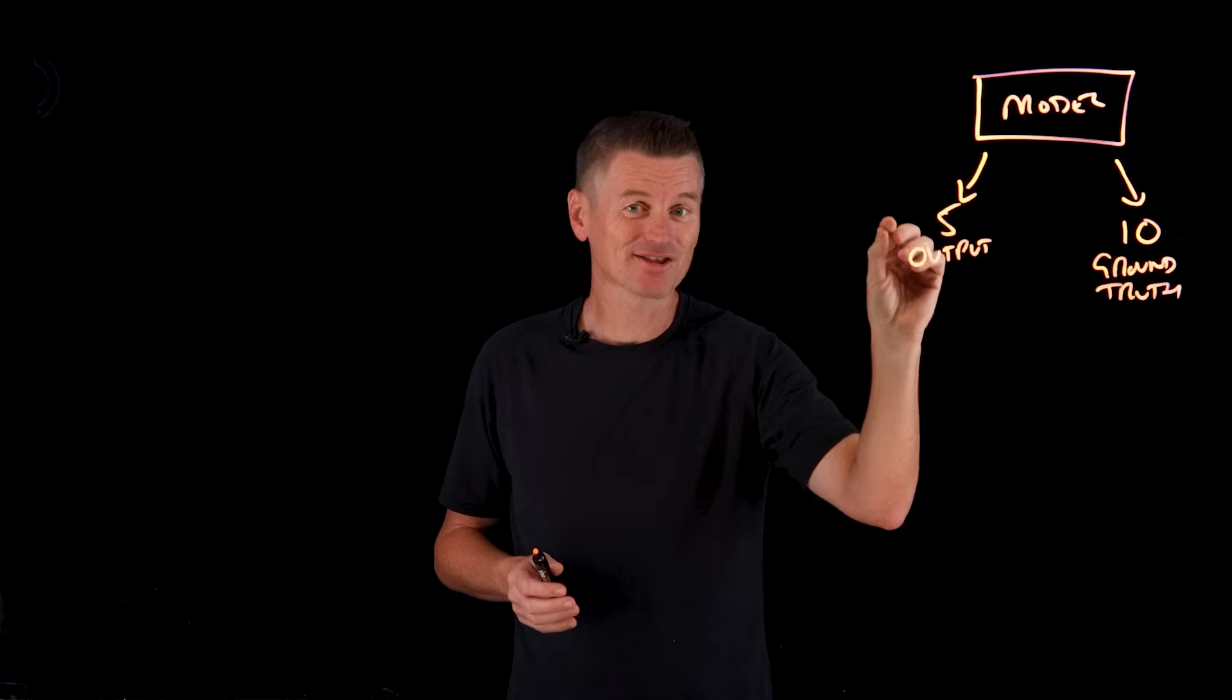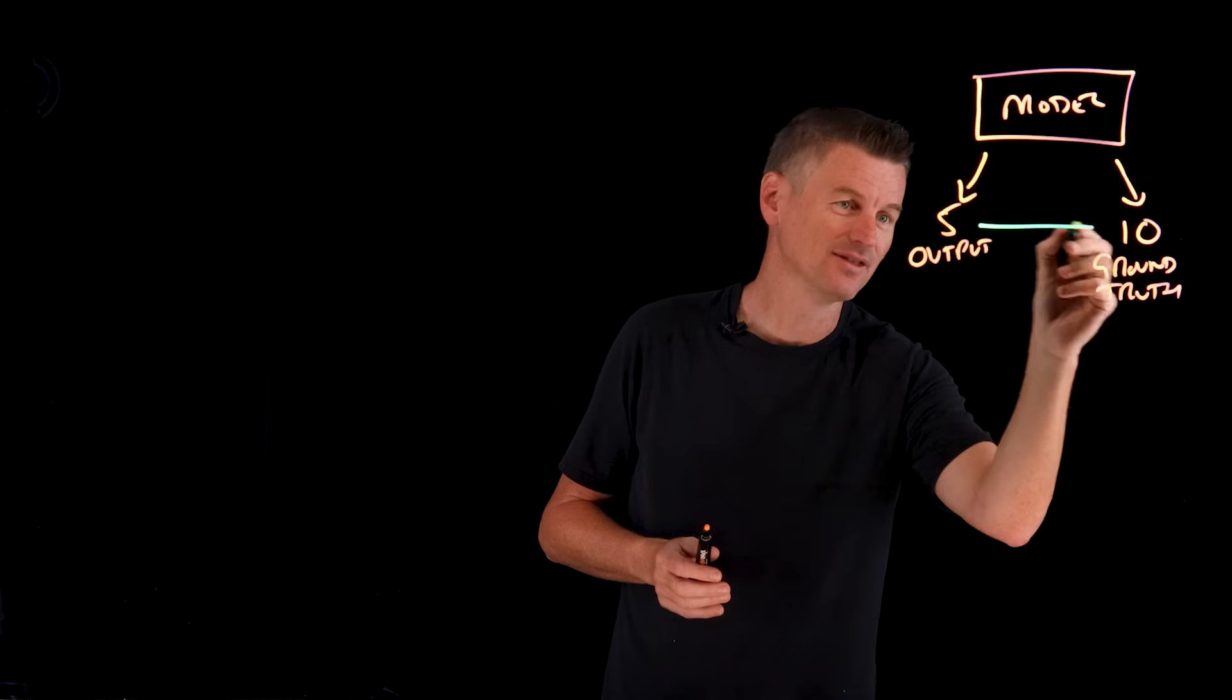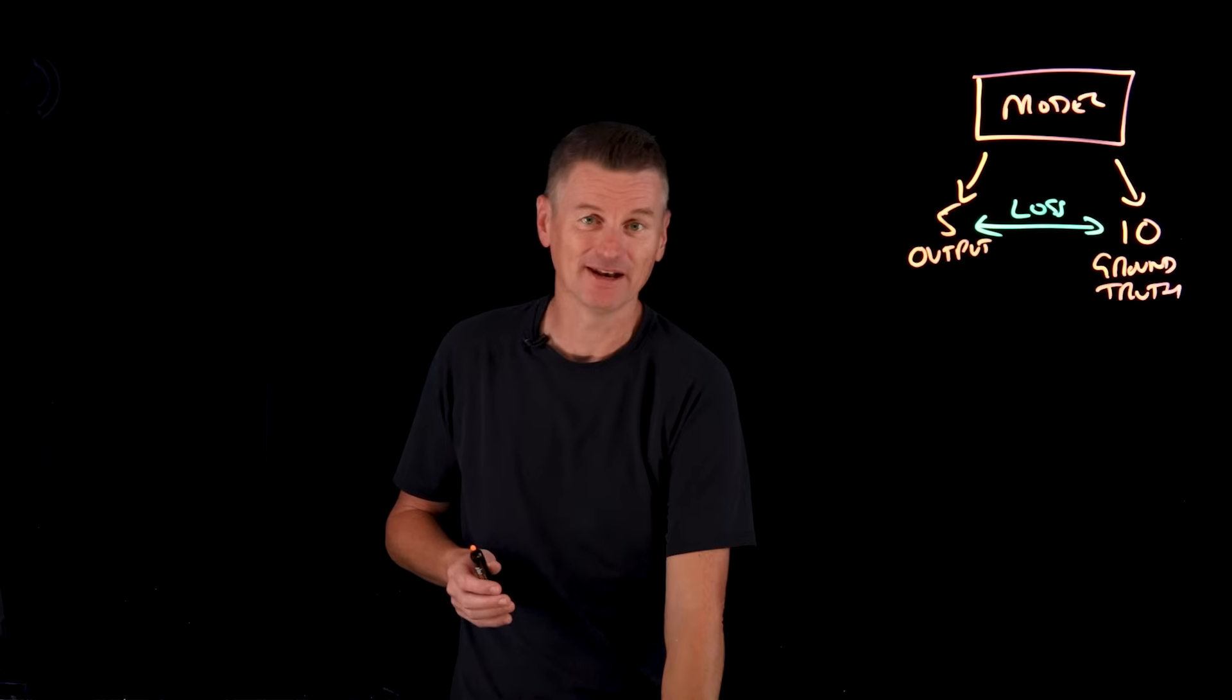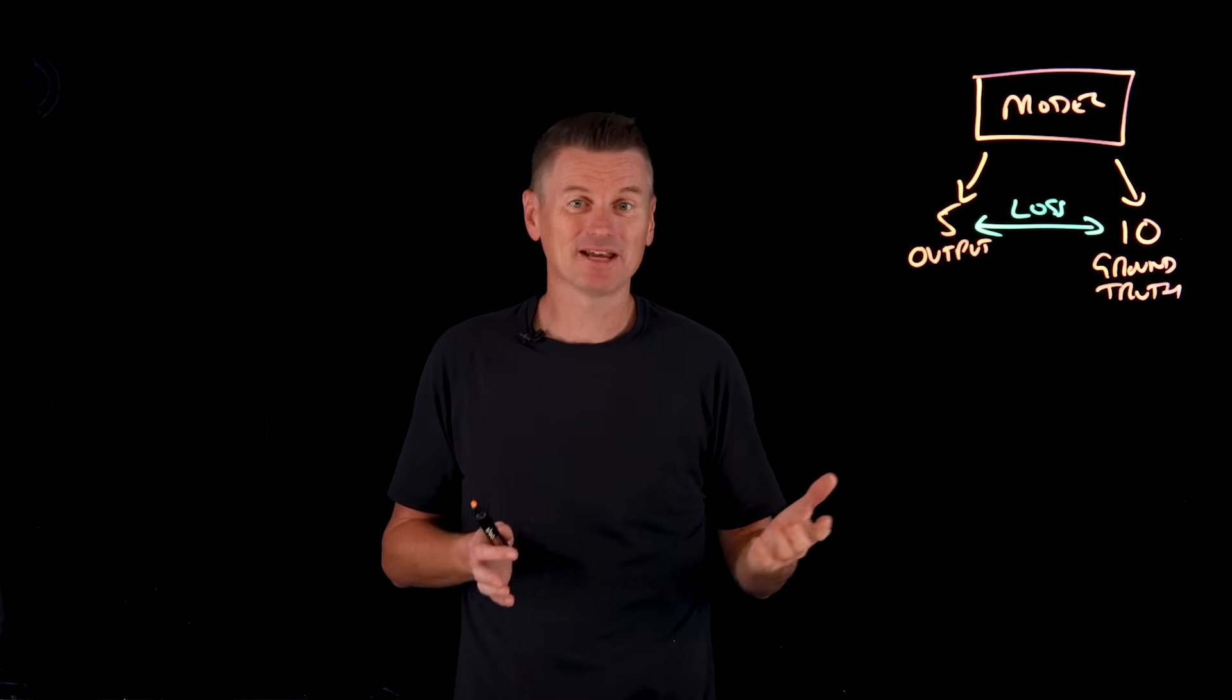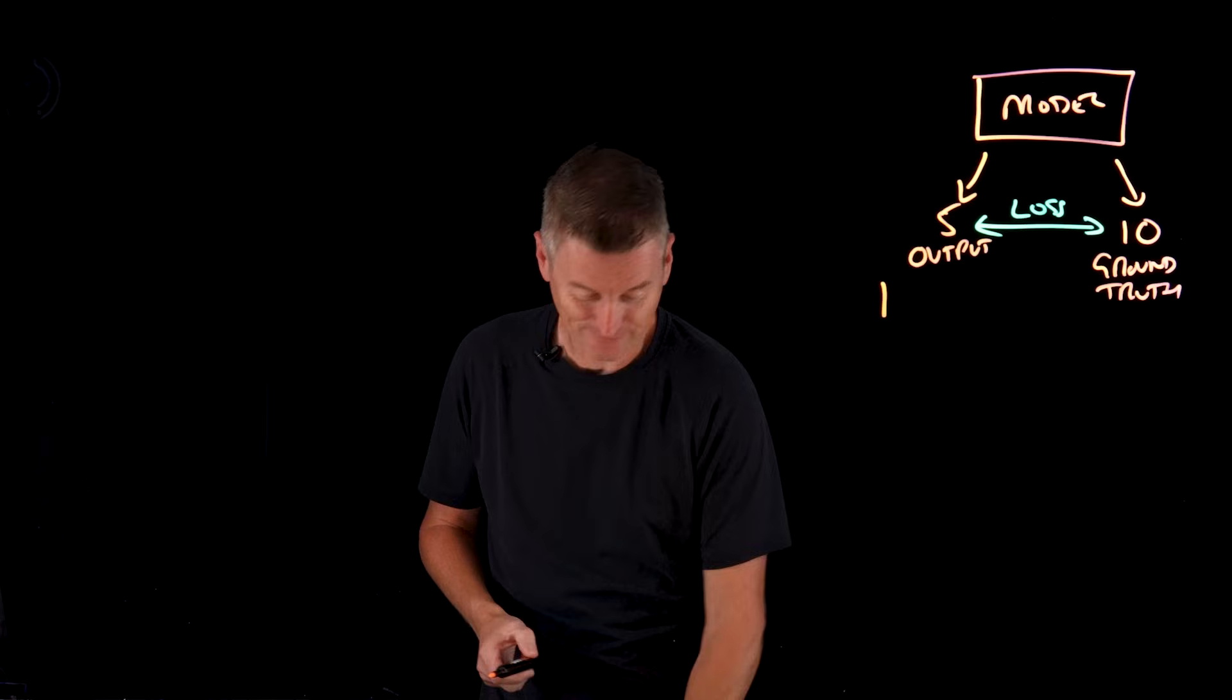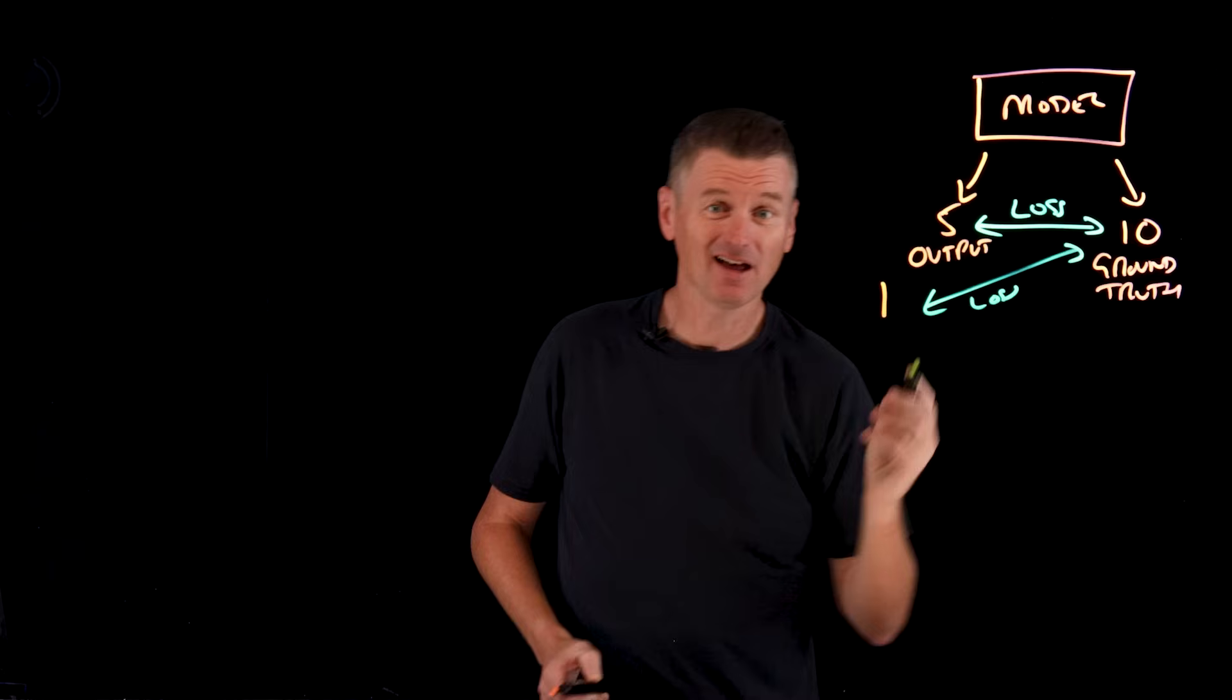Now if the model's predictions are accurate, then the difference between these two numbers, the loss in effect, is comparatively small. If its predictions are inaccurate, let's say it came back with an output of 1 instead of 5, then the loss is larger.